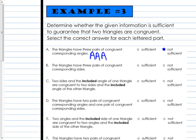And letter B, the triangles have three pairs of congruent corresponding sides. Three pairs of sides would be SSS. Do we know a theorem or postulate of SSS? Yes, we do. So that's enough information. So that's how you complete C, D, E, and F.